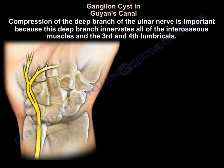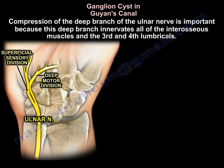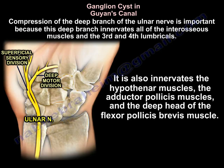Compression of the deep branch of the ulnar nerve is important because this deep branch innervates all of the interossei muscles and the third and fourth lumbricals. It also innervates the hypothenar muscles, the adductor pollicis muscle that gives you the Froment's test, and it innervates the deep head of the flexor pollicis brevis muscle.